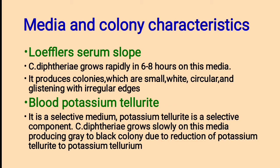On Löffler Serum Slope, Corynebacteria grow rapidly in 6 to 8 hours and produce colonies which are small, wide, circular and glistening with irregular edges.